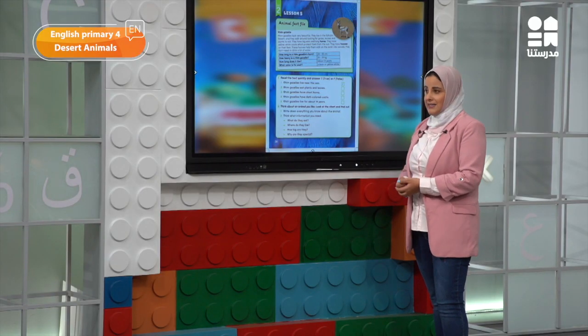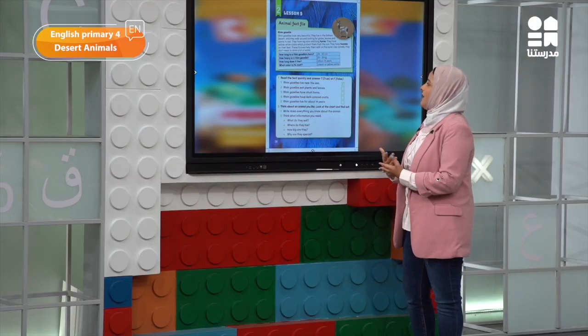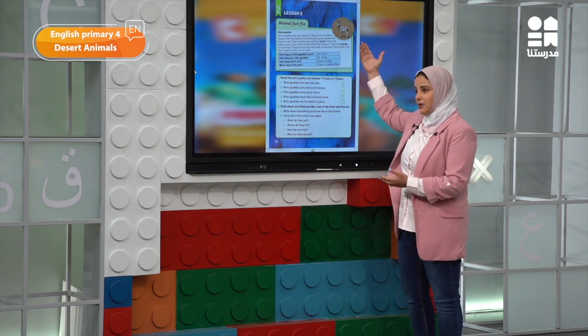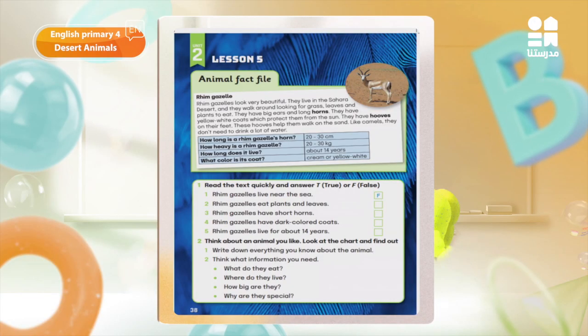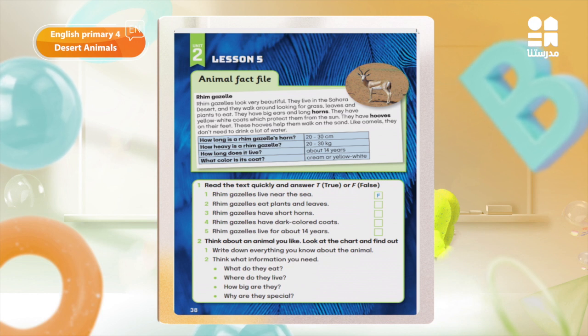We are talking about the gazelle. We say in the first one that it has a nice shape. Then we say that it lives in the Sahara desert, which is in Africa, where it's really hot and dry. They walk around looking for grass, leaves and plants. They have big ears and long horns. They have yellow-white coats which protect them from the sun — the coat protects them from the sun's rays. They have hooves which help them walk on the sand. Like camels, they don't need to drink a lot of water.